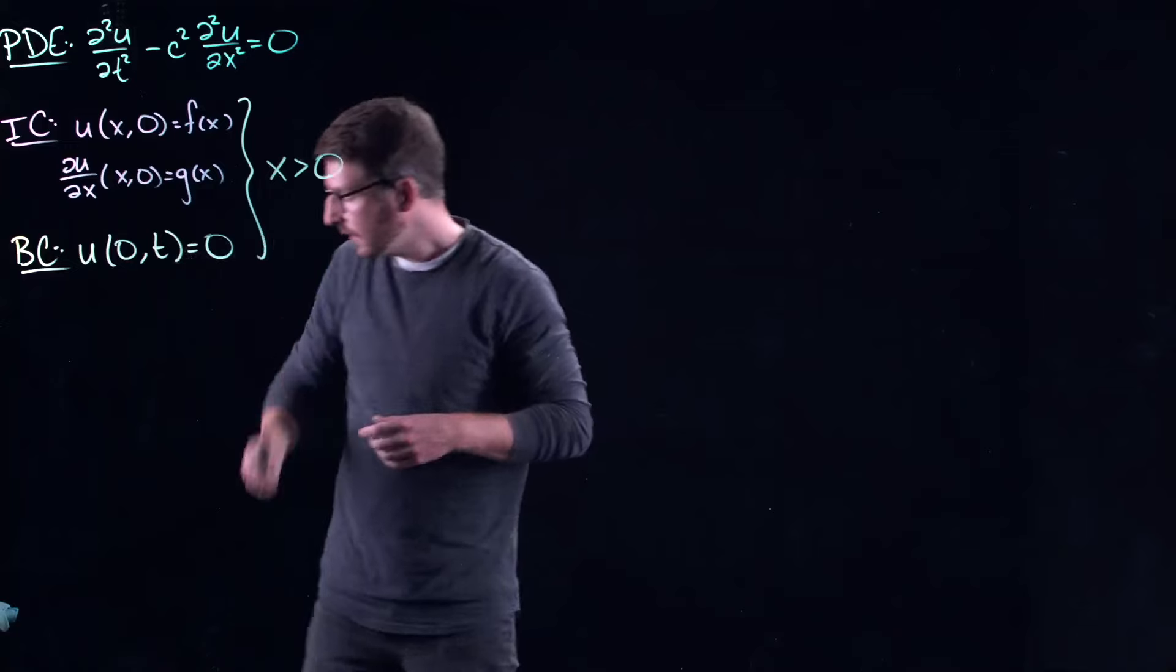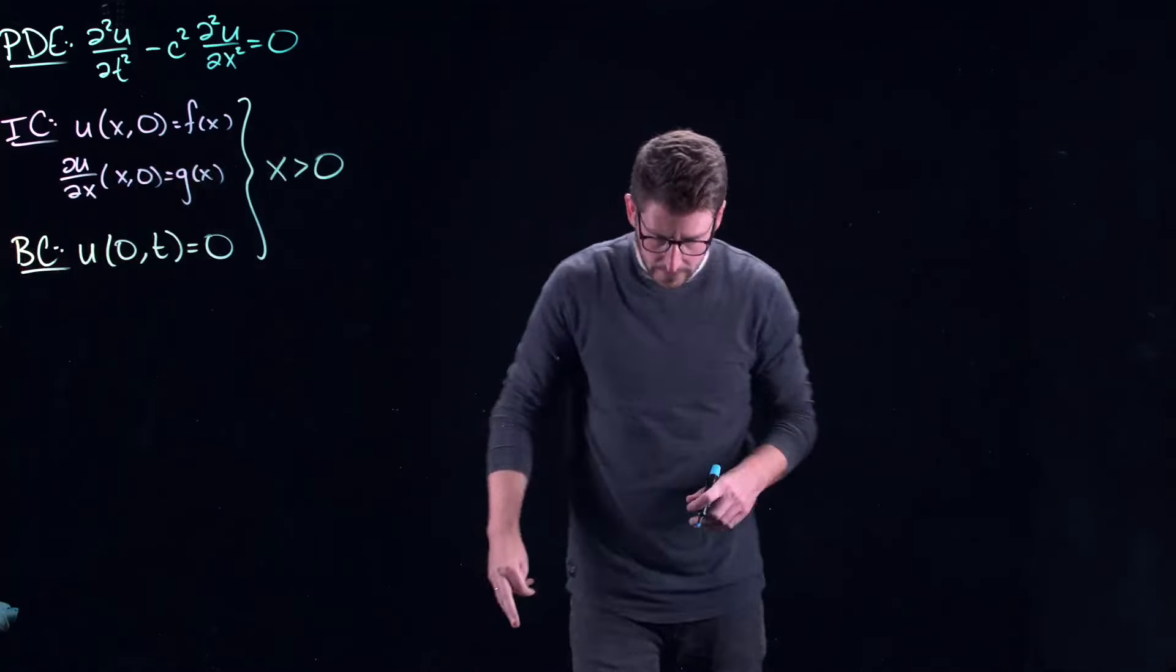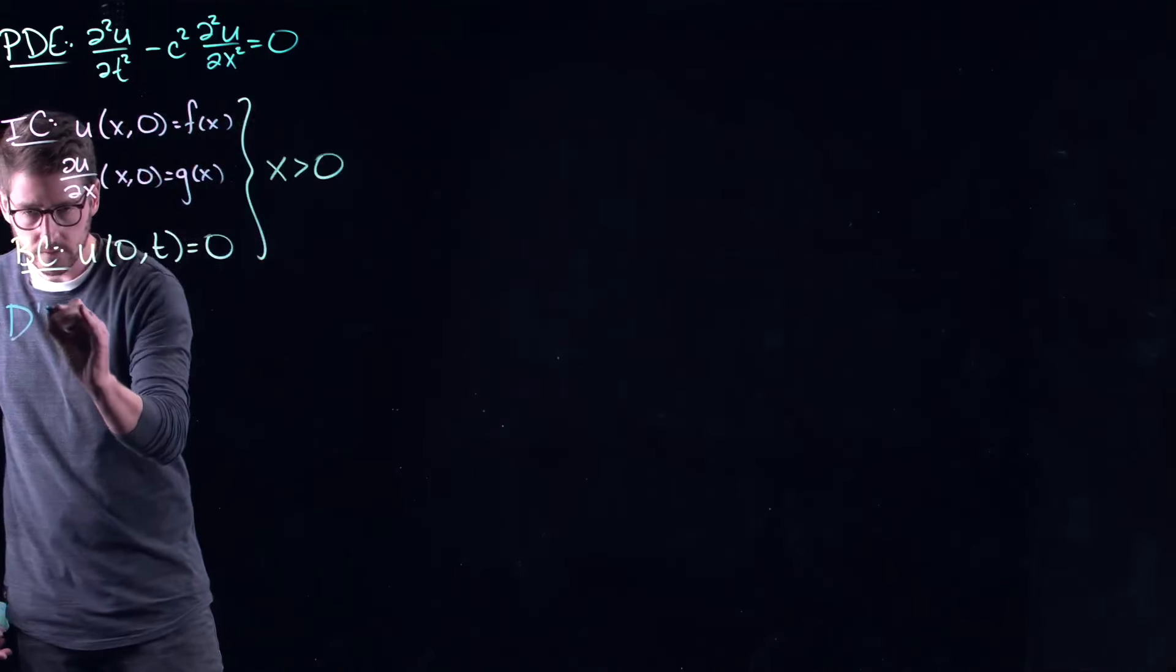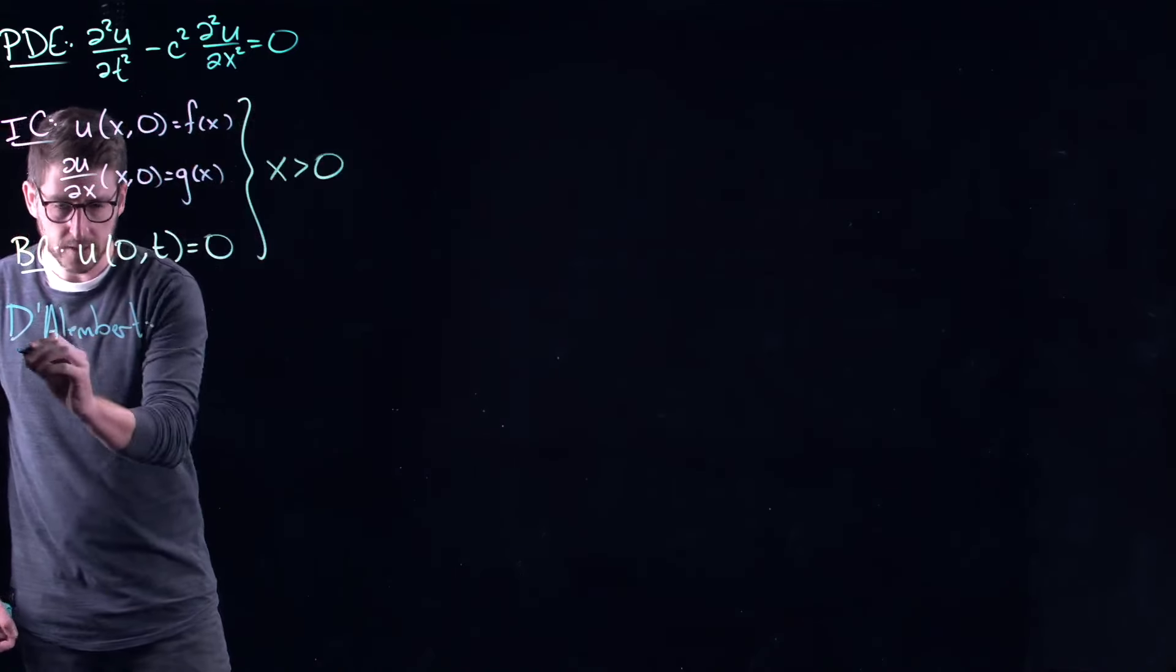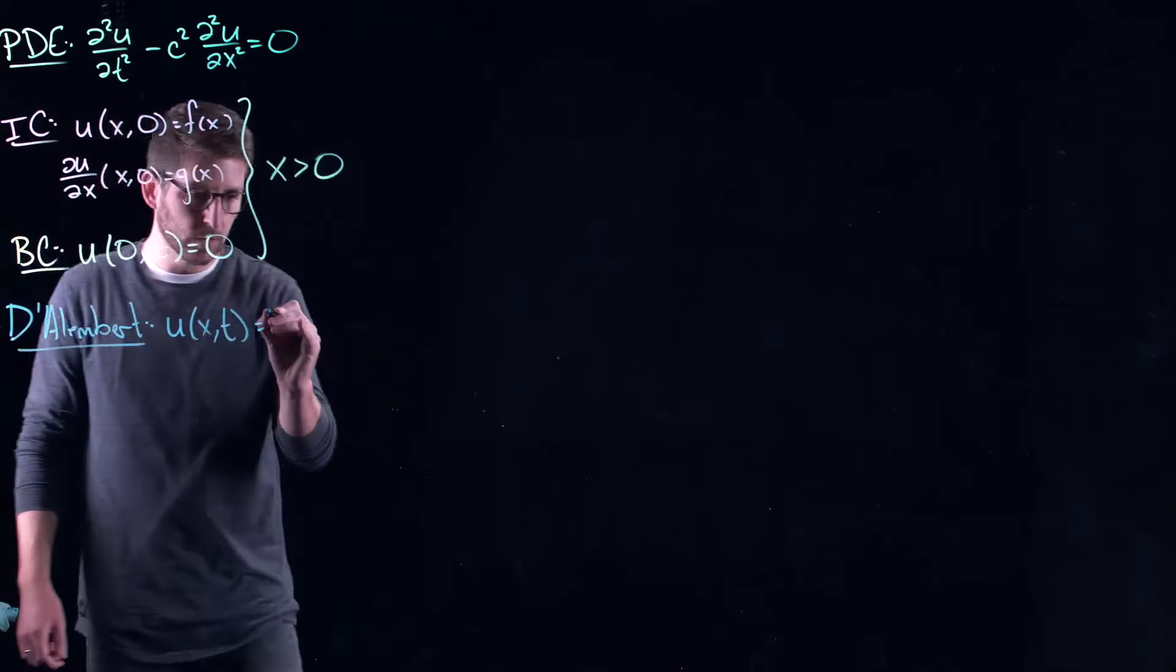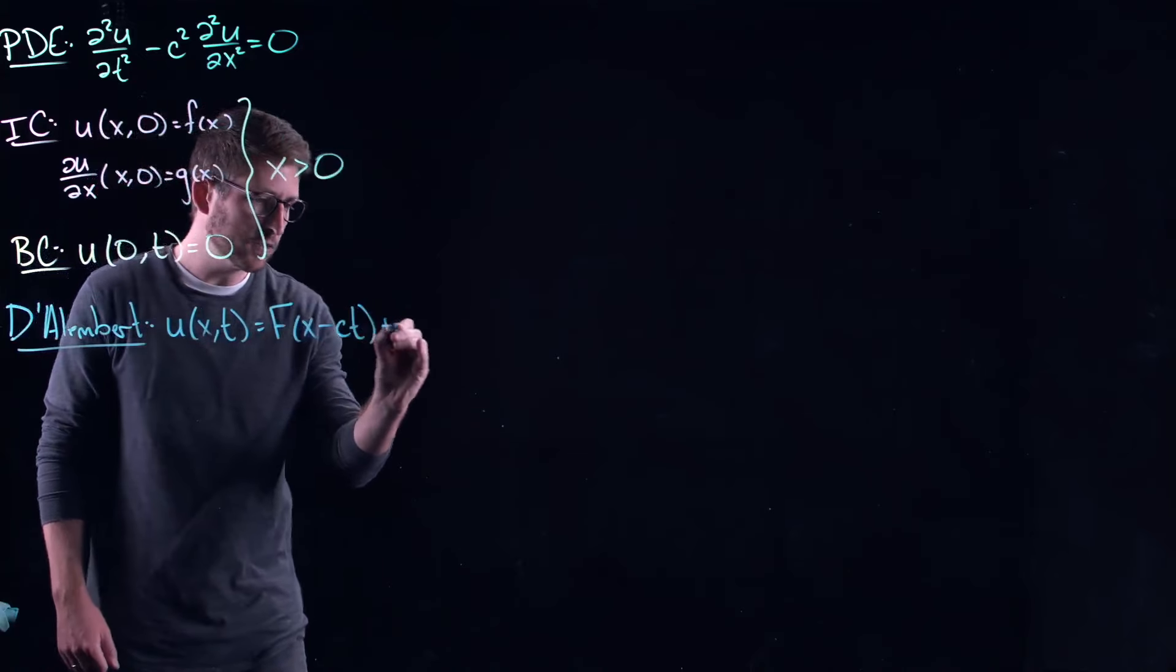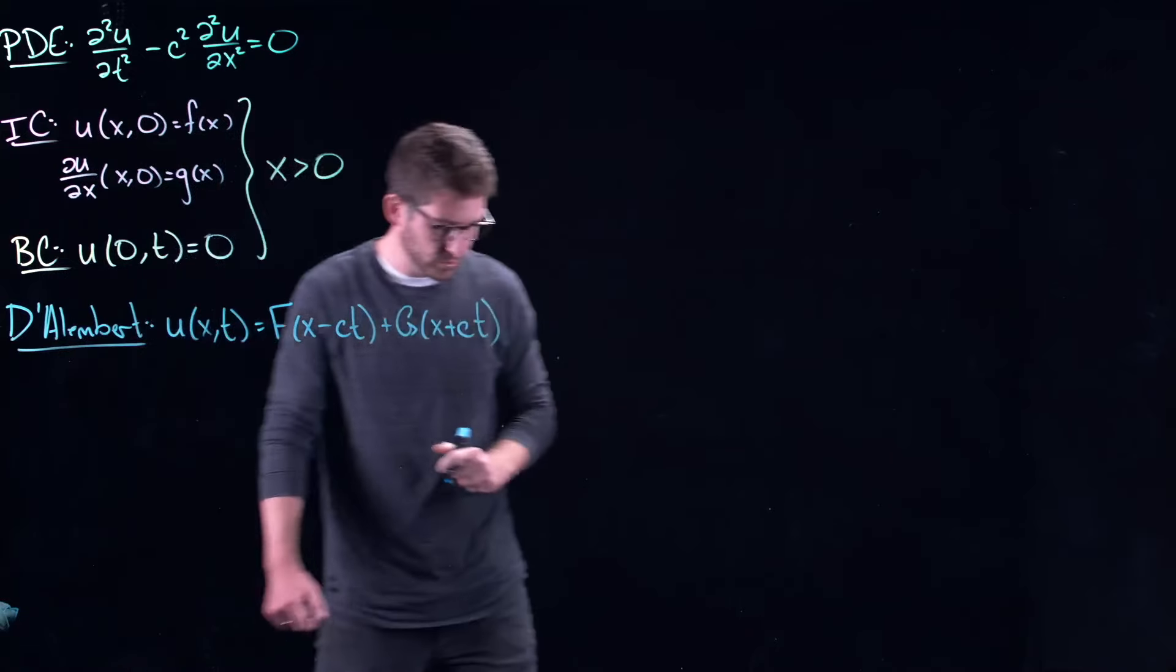So let's just work with one for the time being. So we've got a semi-infinite line, all of the positive real numbers. And again, so D'Alembert tells us, D'Alembert gives us the solution that we can decompose the partial differential equation into a rightward and a leftward traveling wave or a propagating wave solution.